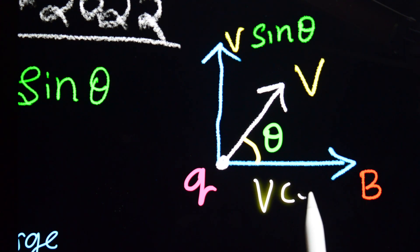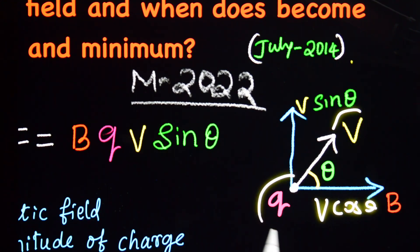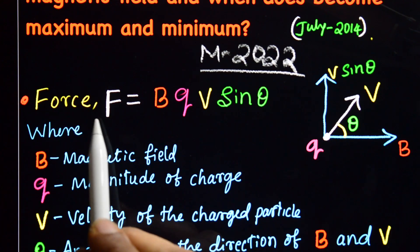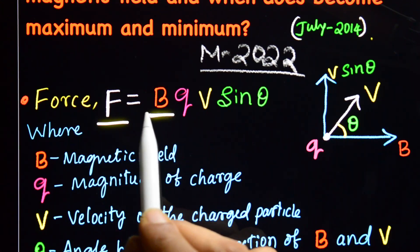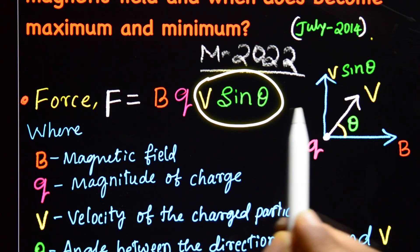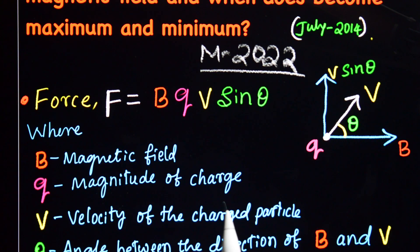Now the force experienced by this charged particle in magnetic field is given by the expression F is equal to B into q into V sin θ. That V sin θ is the vertical component of the velocity.